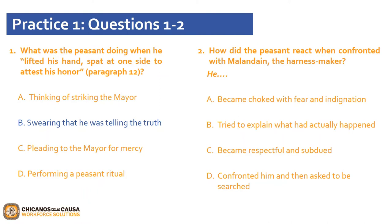Now moving on to question 2: how did the peasant react when confronted with Malandane, the harness maker? He — A, became choked with fear and indignation? B, tried to explain what had actually happened? C, became respectful and subdued? Or D, confronted him and then asked to be searched? If you selected D, confronted him and then asked to be searched, that is the correct answer. As you read the excerpt, you understand that a harness maker has accused a peasant of taking a pocketbook, and the mayor of the town believes the harness maker.